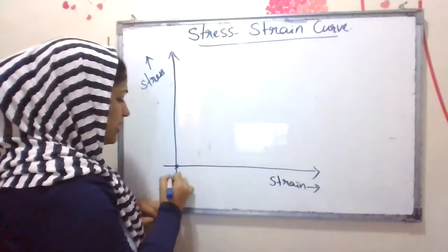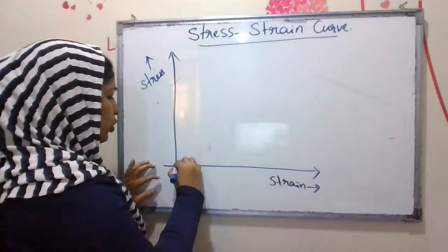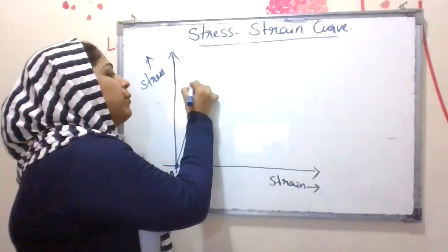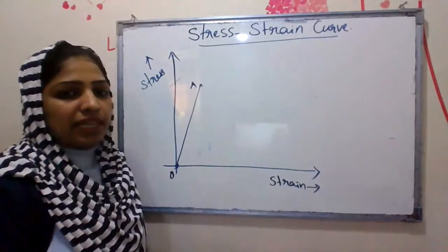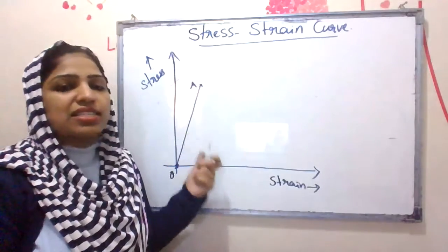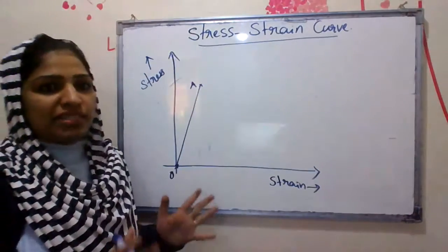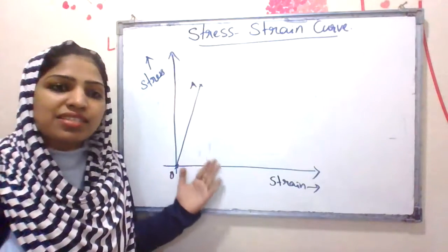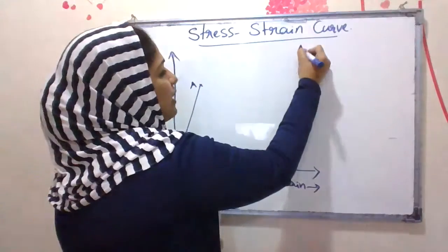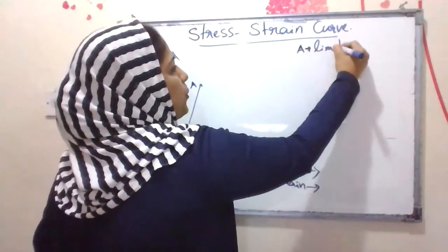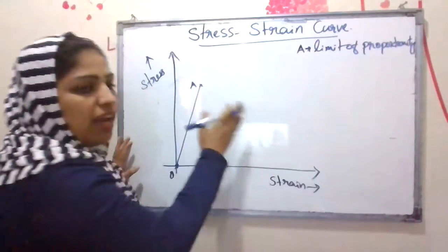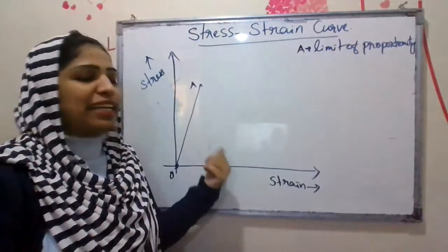Starting from the origin, within the elastic limit — that is, in the region O to A — stress is directly proportional to strain, giving a straight line. This straight line region is the elastic region. The point A is called the Limit of Proportionality, meaning stress is directly proportional to strain up to point A.